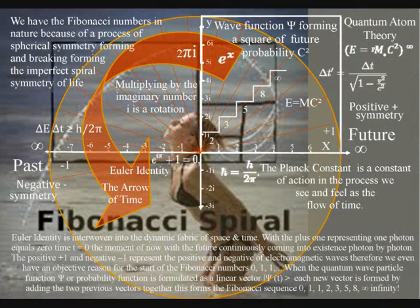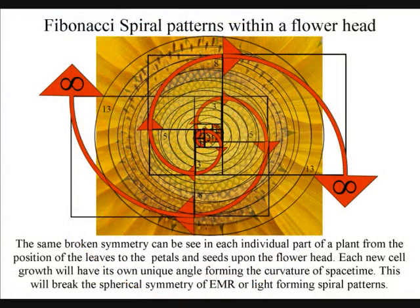This broken spherical symmetry can be best seen in plant life in the form of the Fibonacci spiral being visible almost everywhere in nature.